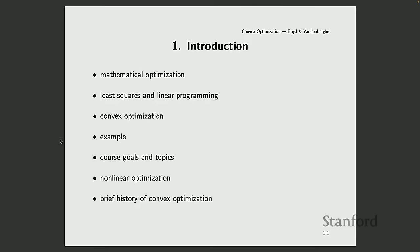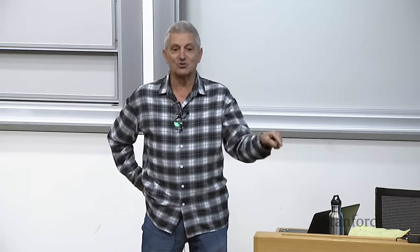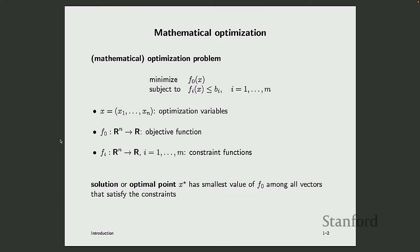The parent of least squares and linear programming is convex optimization — that's what this course is about. This is just to orient you to the big picture. An optimization problem has a few critical components. First, you have an optimization variable — sometimes called 'decision variables' in operations research, a fantastic name because it tells you these are the things you need to choose.